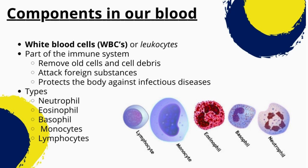Neutrophils are the most abundant type of white blood cells and are involved in the initial response to bacterial infections. They are the first cells to arrive at the site of infection and engulf the invading microorganisms. Lymphocytes play a key role in the adaptive immune response; they include T-cells, which recognize and destroy infected cells, and B-cells, which produce antibodies to neutralize pathogens. Monocytes mature into macrophages, which engulf and digest invading microorganisms. Eosinophils play a role in the immune response to parasitic infections and allergies. Basophils play a role in the immune response to allergies and in the regulation of inflammation. Overall, white blood cells play a crucial role in protecting the body from harmful microorganisms and maintaining a healthy immune system.